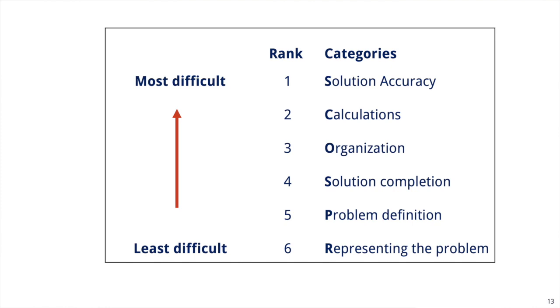Another thing we have looked at is comparing scores across the six stages. From our research, we found that stages of problem solving that involved problem identification and representation were the least difficult. On the other hand, the lowest scores were in the solution accuracy stage, and that could just be because of the compounding effects from possible errors from other stages.